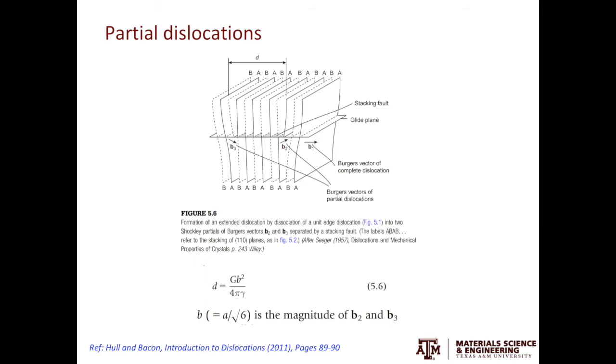The energy of B1, the perfect dislocation, is greater than the sum of the two partial dislocations, B2 and B3. B2 and B3 repel each other. However, between B2 and B3, there is a stacking fault, and this stacking fault creates additional surface energy. This stacking fault energy tries to bring the two partials together.